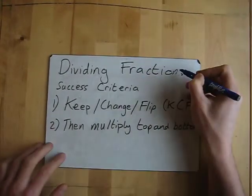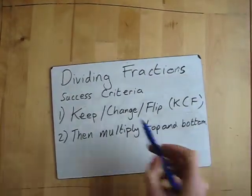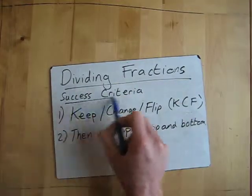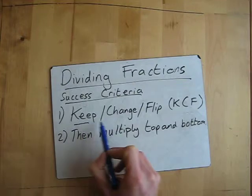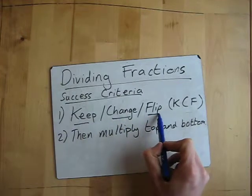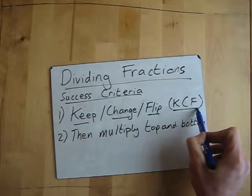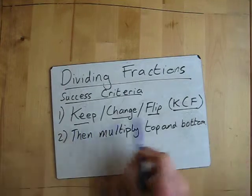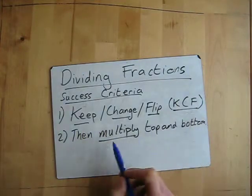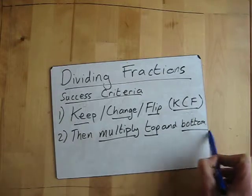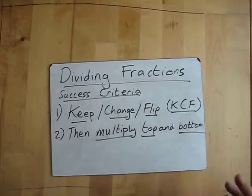Dividing fractions: the key to success here is these three keywords: keep, change, and flip, or KCF for short. Basically, after you've done this process it changes to a multiply. So all you do then is multiply the top numbers and the bottom numbers, and I'll show you what I mean by that.